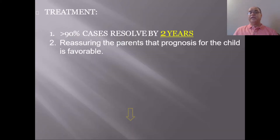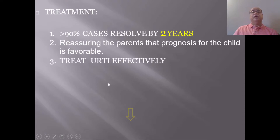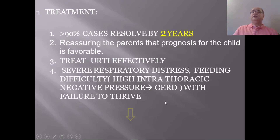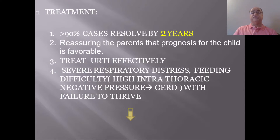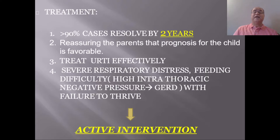More than 90 percent of cases resolve spontaneously by the age of two years. Management for most cases involves reassuring the parents about the favorable prognosis, while upper respiratory tract infections should be treated appropriately. In severe respiratory distress or when feeding difficulty leads to high thoracic negative pressure causing gastroesophageal reflux disease and failure to thrive, active intervention is required.